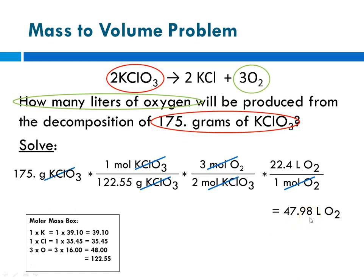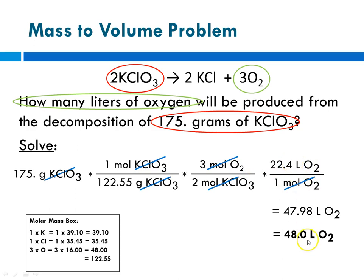This number has 4 significant digits and we have to round to 3. Our last digit is a 9, and the number after it is an 8. The rule is: 5 and above, you give it a shove — so that rounds to 48.0 liters of oxygen. To recap: we were given grams, went from grams to moles using molar mass, then multiplied by our mole ratio, and then multiplied by molar volume.